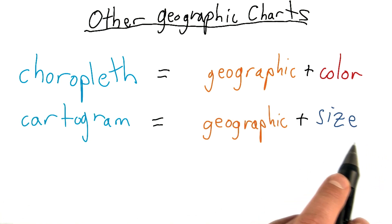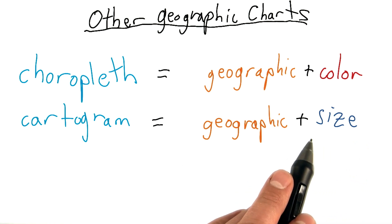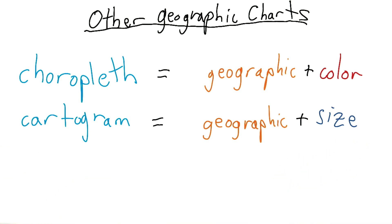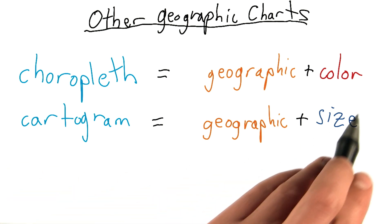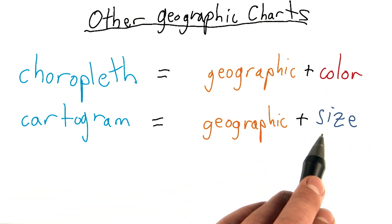A cartogram uses a different visual encoding to encode its value. A cartogram represents some geographic data and uses the size of the geographic region to encode often some continuous value. Again, going back to the unemployment example, rather than representing the unemployment rate of a state by its color with a choropleth, we can represent it by the size of the state geographic region that we draw.